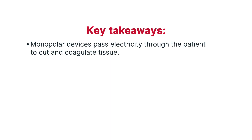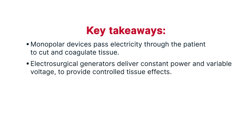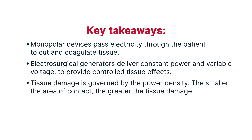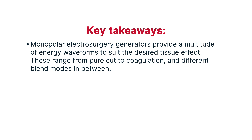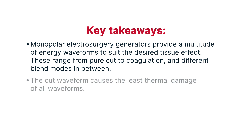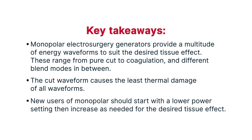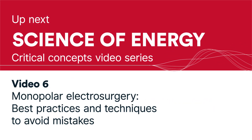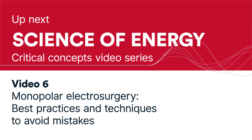Key takeaways. Monopolar devices pass electricity through the patient to cut and coagulate tissue. Electrosurgical generators deliver constant power and variable voltage to provide controlled tissue effects. Tissue damage is governed by the power density — the smaller the area of contact, the greater the tissue damage. Monopolar electrosurgery generators provide a multitude of energy waveforms to suit the desired tissue effect, ranging from pure cut to coagulation and different blend modes in between. The cut waveform causes the least thermal damage of all waveforms. New users of monopolar should start with a lower power setting, then increase as needed. In the next video, we will review monopolar electrosurgery best practices and techniques to help you avoid mistakes.